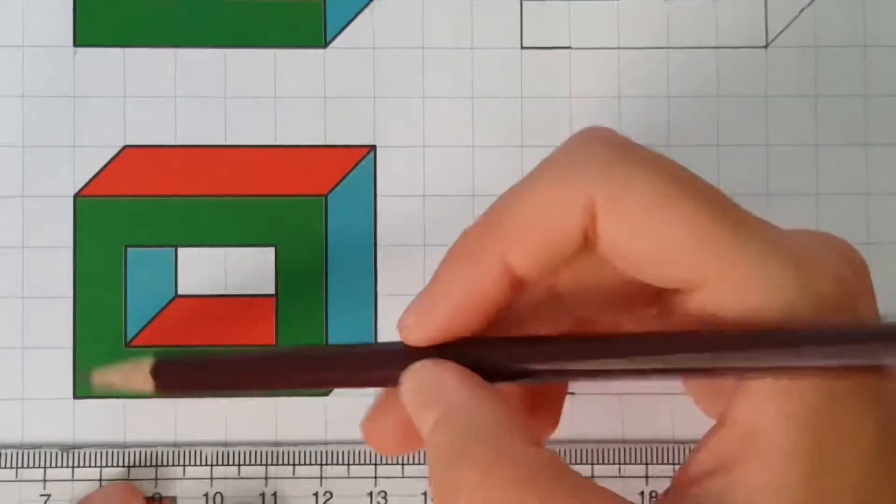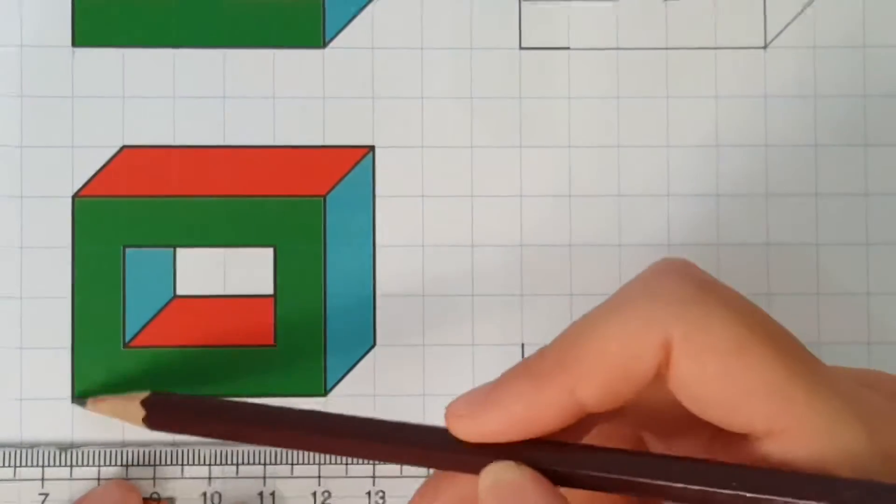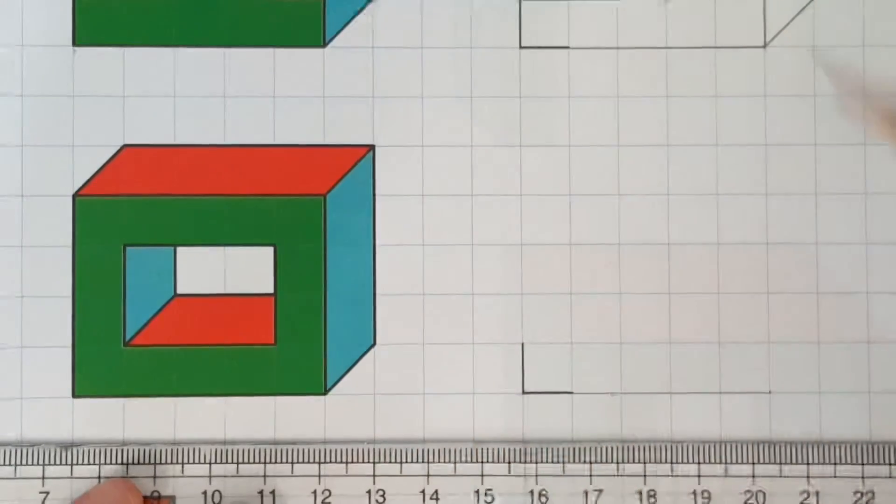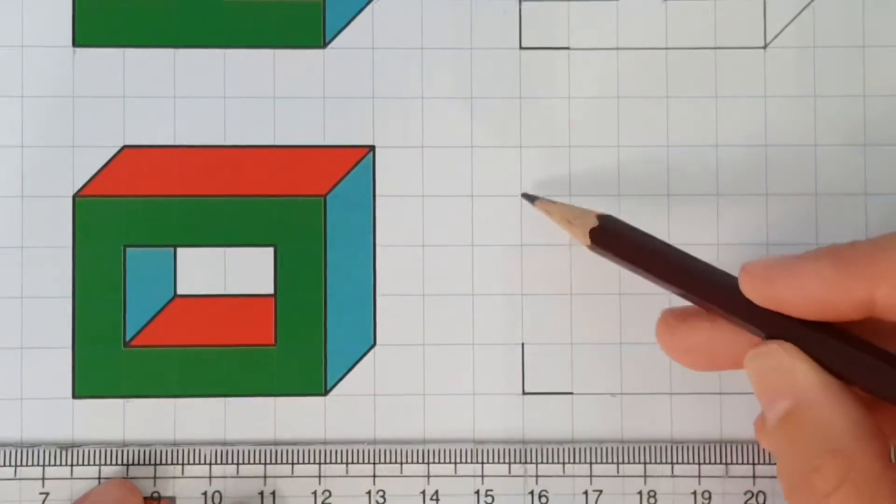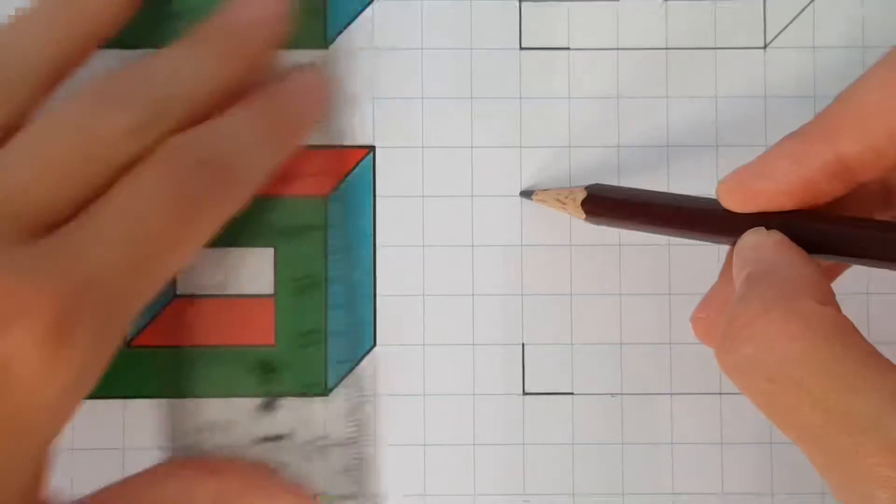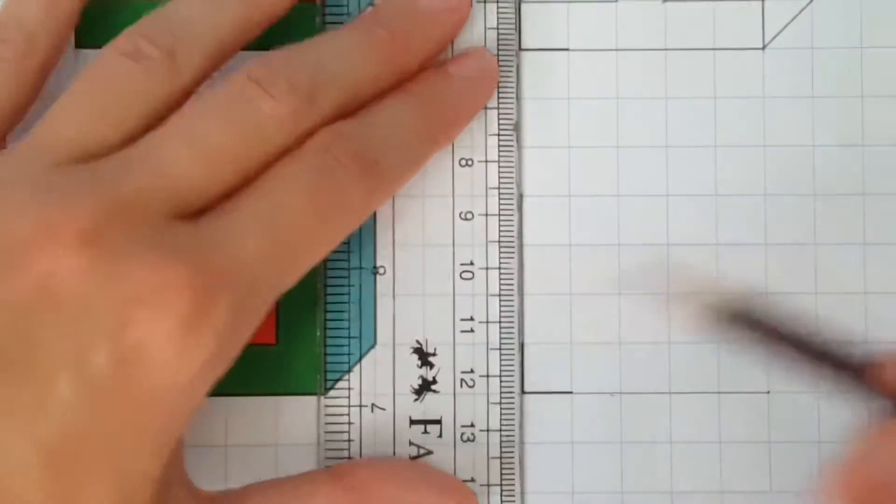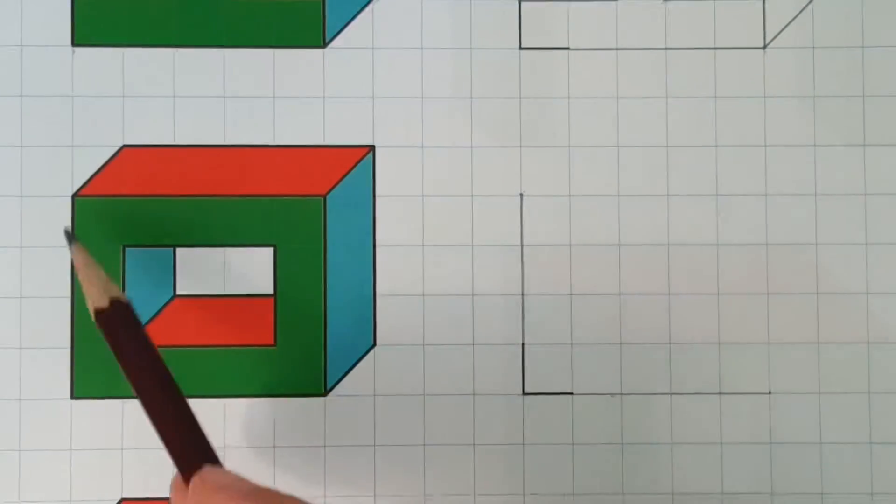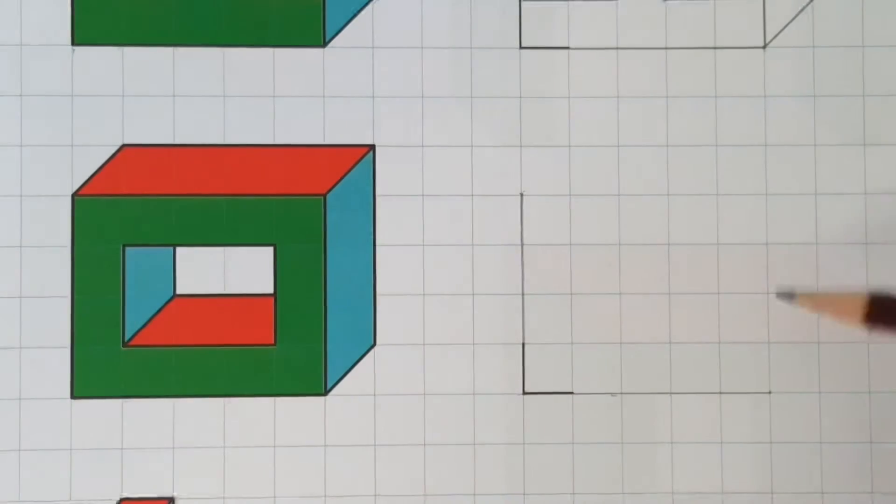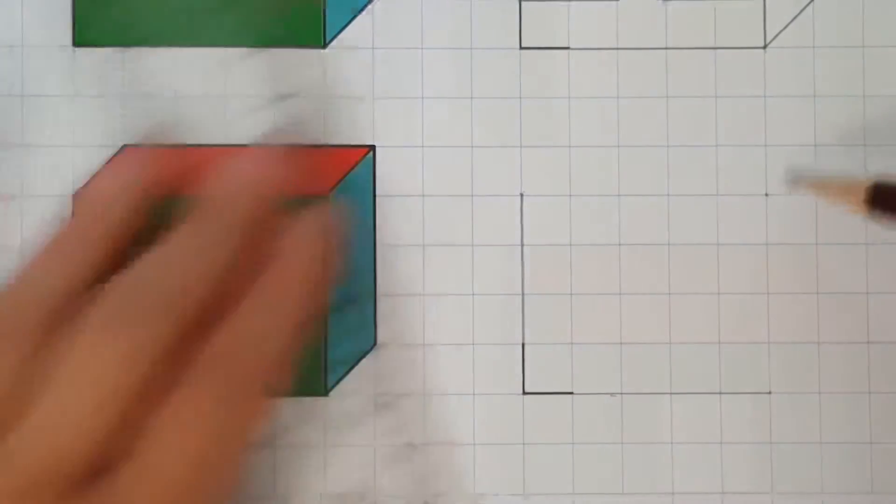Now the vertical lines. The vertical lines are four squares up. At this stage, only use construction lines, which are going to be drawn very, very lightly.